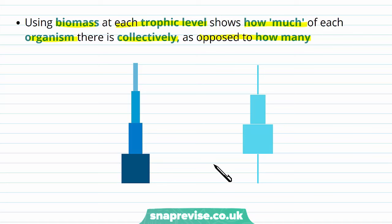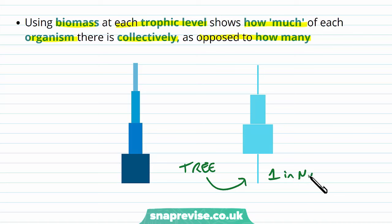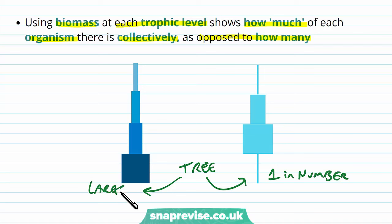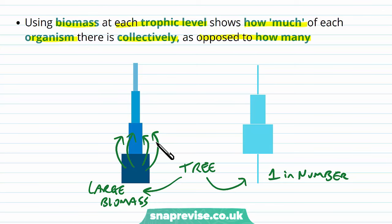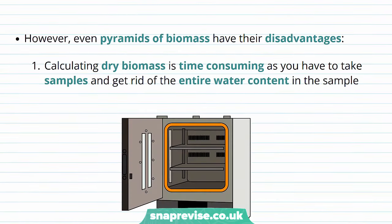At the bottom level, if this were a tree, showing that there's only one in number doesn't really give us much of a picture of the food chain. Showing that there's a large biomass, however, tells us that there's lots of food that can be eaten by the aphids and caterpillars and passed to the next level.